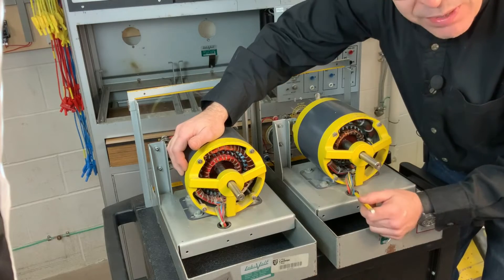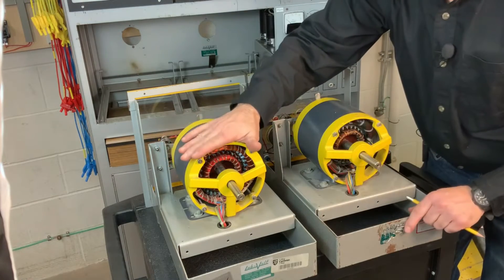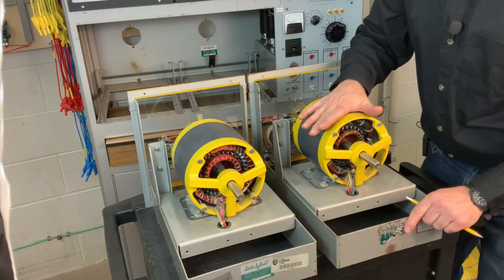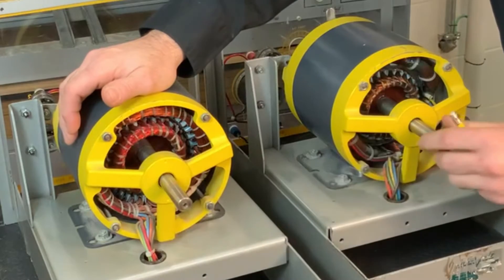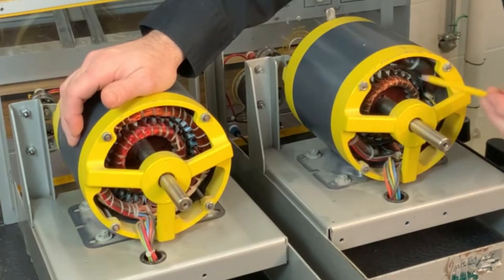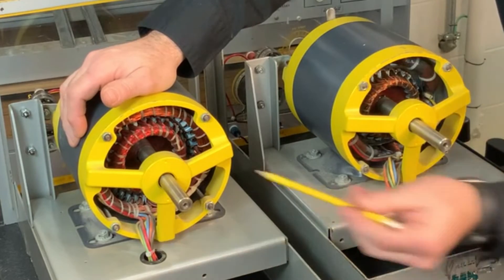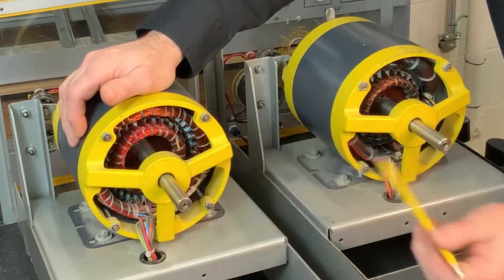And that's the major distinction between the AC machine and the DC machine. It's not in the armature, which we can see is fairly identical in every respect. It's in the winding of the stator.